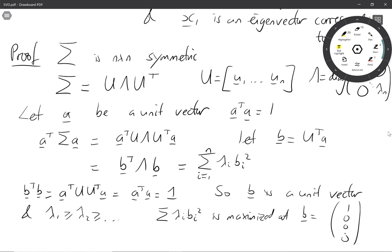...at b equals (1,0,0,...,0). Okay that's a unit vector and it just picks out λ₁ which is the biggest of the eigenvalues. Well what is a? b was U transposed a so a must be Ub which is u₁. Okay so the maximum we can achieve is λ₁ and it's achieved at the first eigenvector u₁ proving the result.